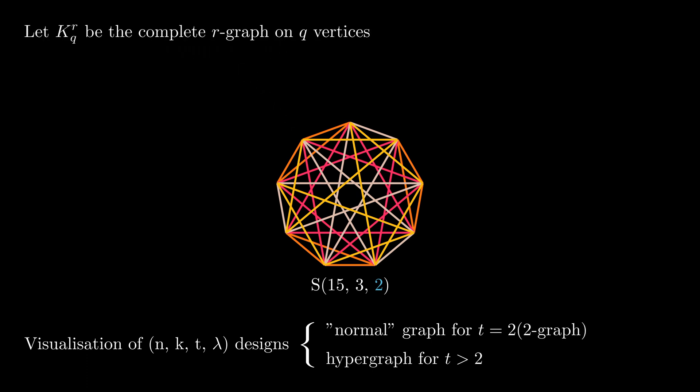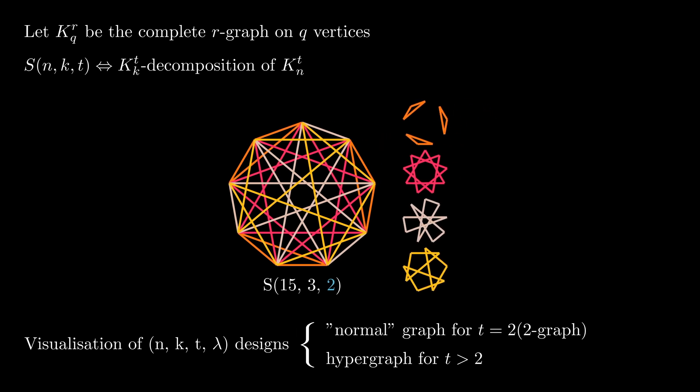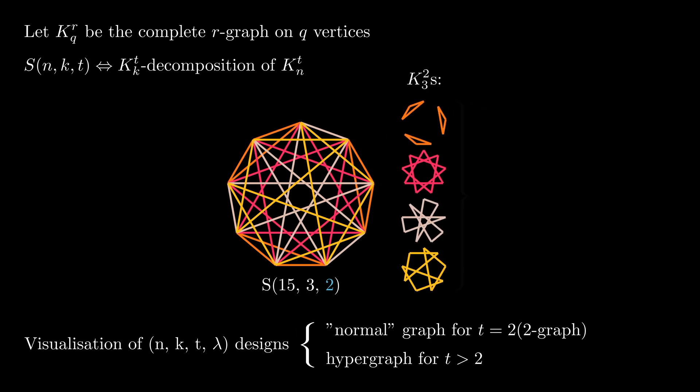From now on, we will use the notation displayed on the screen to denote the complete R graph on Q vertices. Vertices is a synonym for nodes. You can use the one you like more. A Steiner system with parameters n, k and t is equivalent to a t graph on k vertices decomposition of a larger t graph on n vertices. So all these partial graphs shown now on the screen are two graphs and together they form a decomposition of a two graph on 15 vertices.